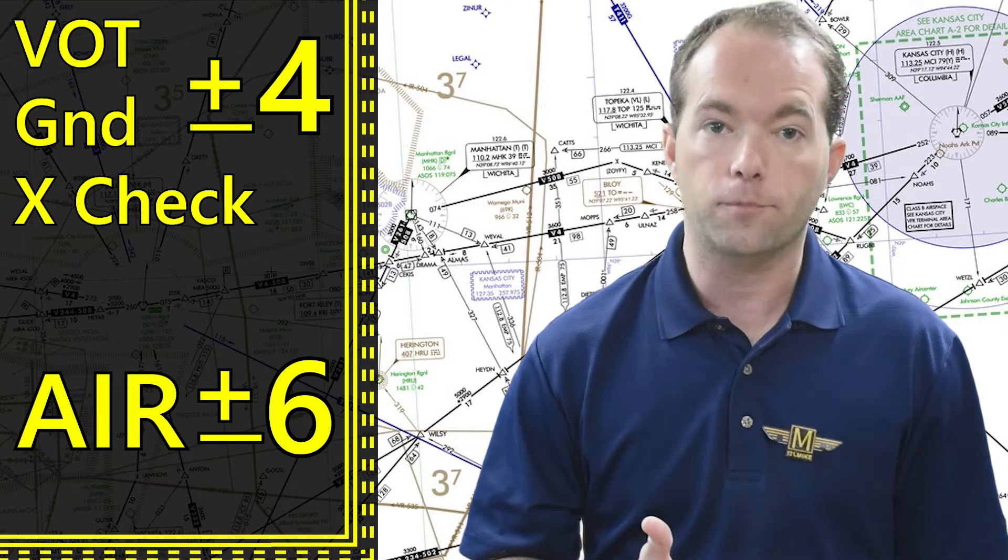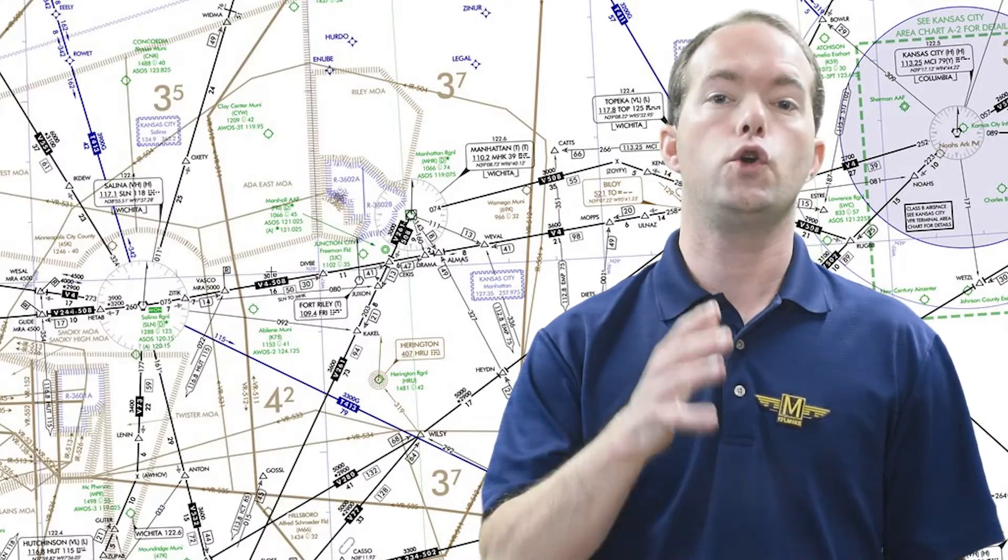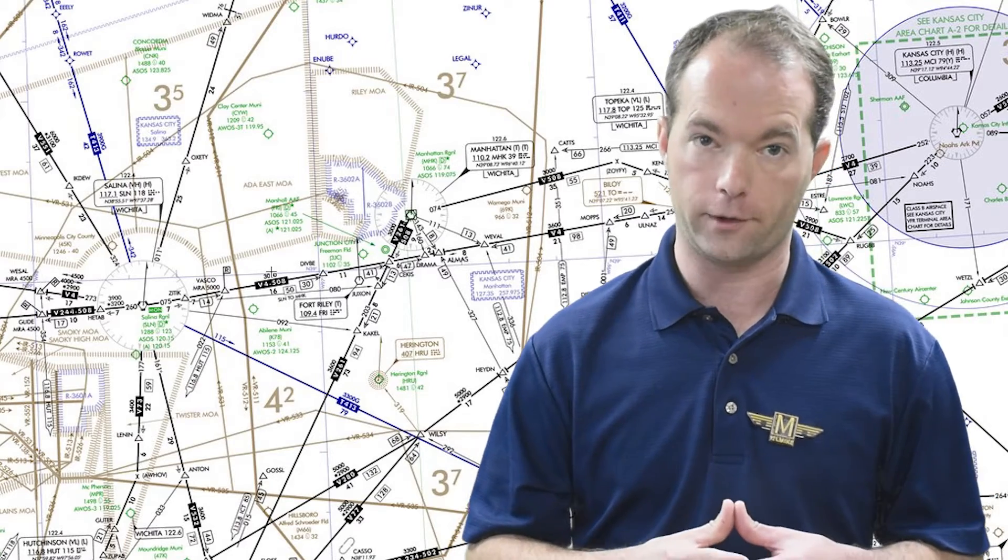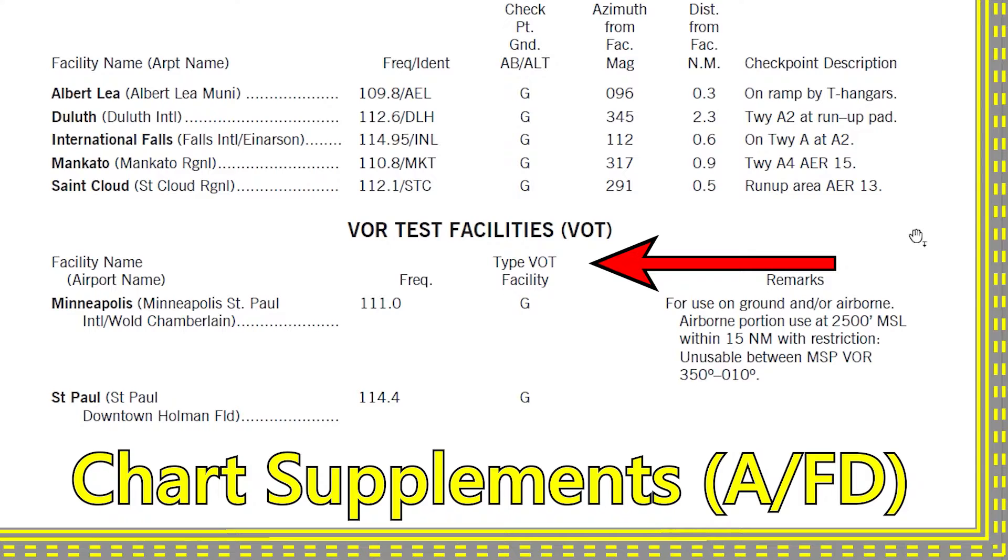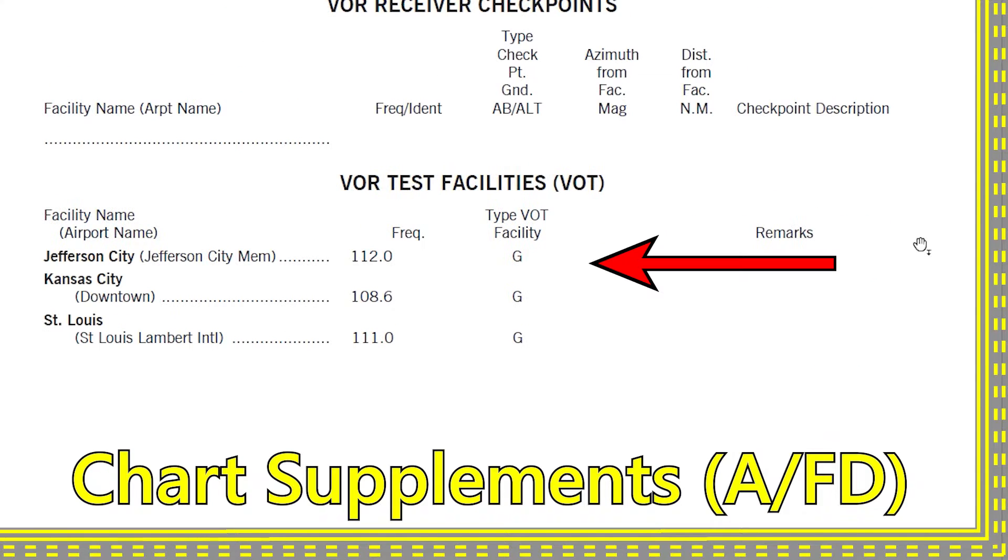Now how do you find such places to do these checks? You can check the things formerly known as airport facility directories, now chart supplements. Here's one and here's another.